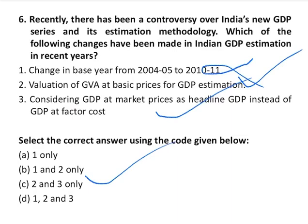In the new GDP series, GVA at basic prices replaces GDP at factor cost. Headline GDP is now GDP at market prices. Other changes include incorporation of MCA21, the e-governance database of the Ministry of Corporate Affairs, for comprehensive coverage of the corporate sector in mining, manufacturing, and services. Financial sector and regulatory bodies are also included. Additionally, the new method addresses differential labor productivity by assigning weights to different categories of labor based on their productivity, rather than assuming all workers contribute equally.